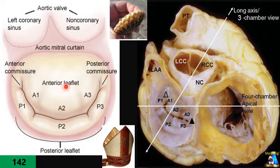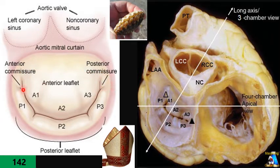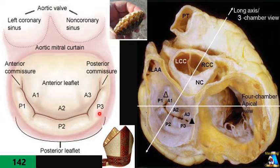There are three scallops. Based on their side, they take the name and number: anterior A1 to A3, and posterior P1 to P3. The connection of those two leaflets is called the commissure — anterior commissure is close to the left atrial appendage and posterior on the other side. The anterior mitral valve leaflet is wider and the posterior mitral valve leaflet is narrower but longer.